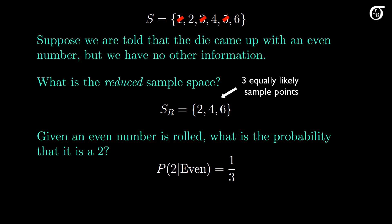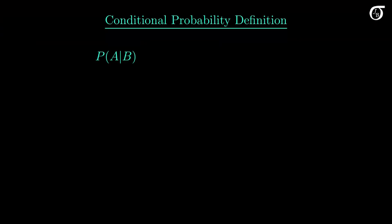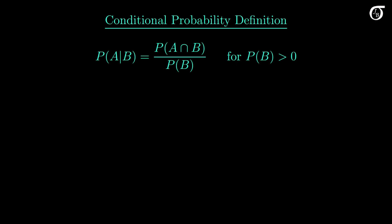Knowing the number is even has doubled the probability that it is a 2. Now let's look at the actual definition of conditional probability. We write the conditional probability of event A given that event B has occurred — anything to the right of the vertical bar is known to have occurred or assumed to have occurred. The conditional probability is defined to be the probability of the intersection of A and B over the probability of event B. This formula won't work if the probability of event B is 0, so the conditional probability of A given B is only defined if the probability of event B is greater than 0.